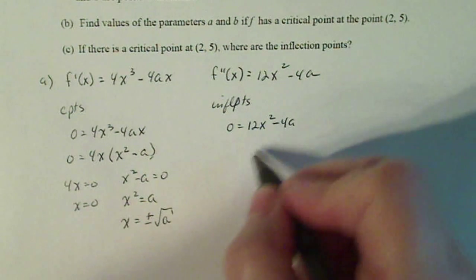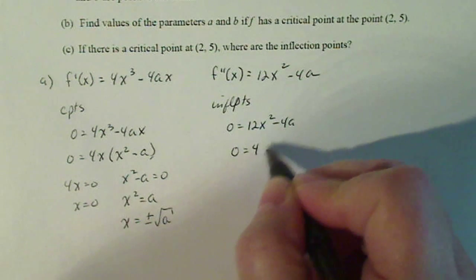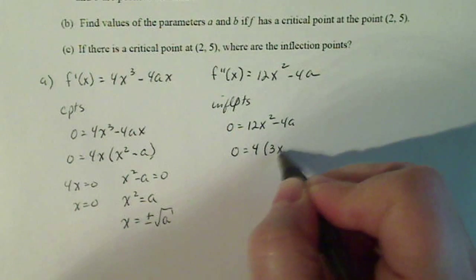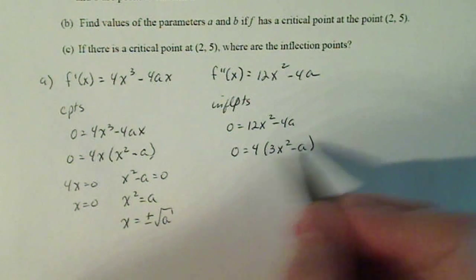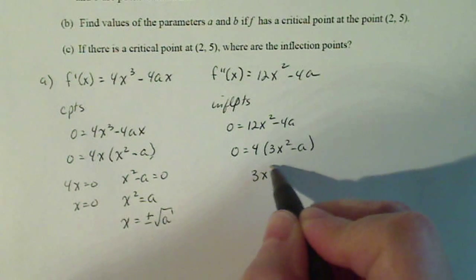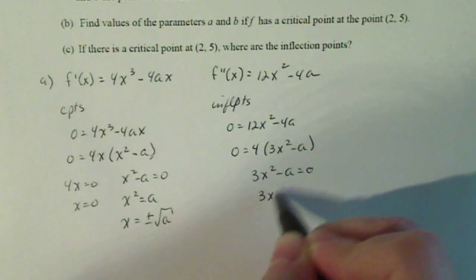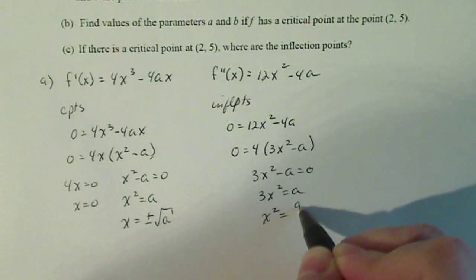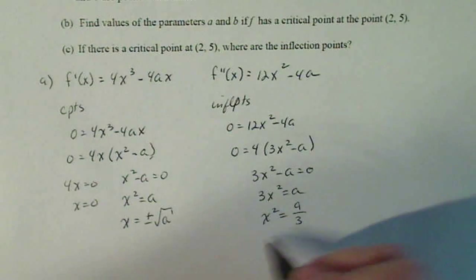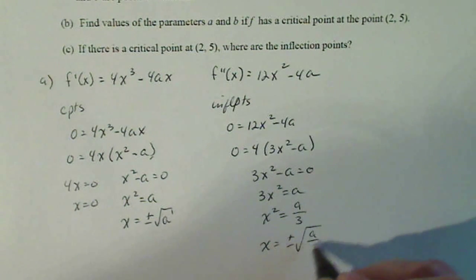Now for the inflection points, I'm going to factor out 4 out of both of these. So 0 equals 4 times the quantity 3x squared minus a. So 4 will never equal zero, but I know that 3x squared minus a can equal zero. So 3x squared equals a. x squared equals a divided by 3. So in the end, x is equal to plus or minus square root of a over 3.